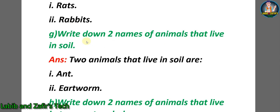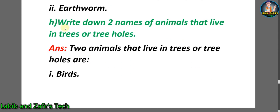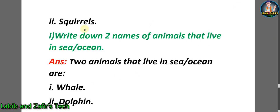Question F/G: write down two names of animals that live in soil. Answer: number one — ant; number two — earthworm. Question H: write down two names of animals that live in trees or tree holes. Answer: number one — birds; number two — squirrels. Question I: write down two names of animals that live in sea or ocean. Answer: number one — whale; number two — dolphin.